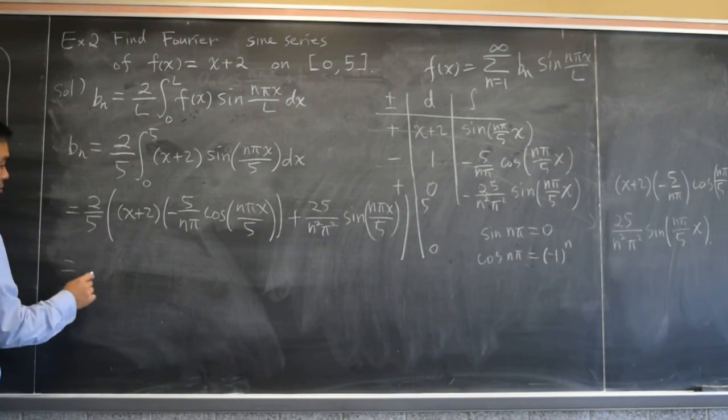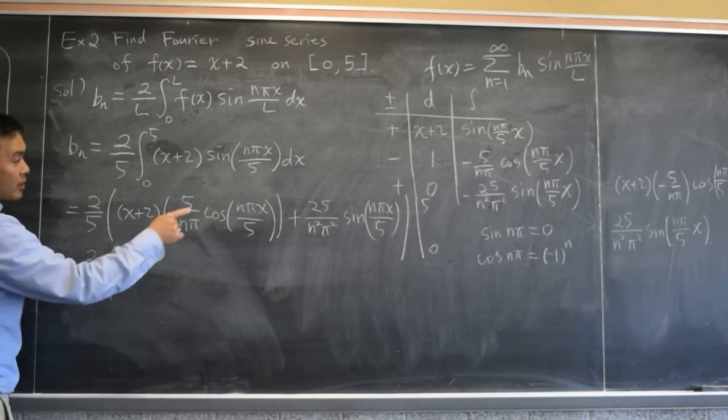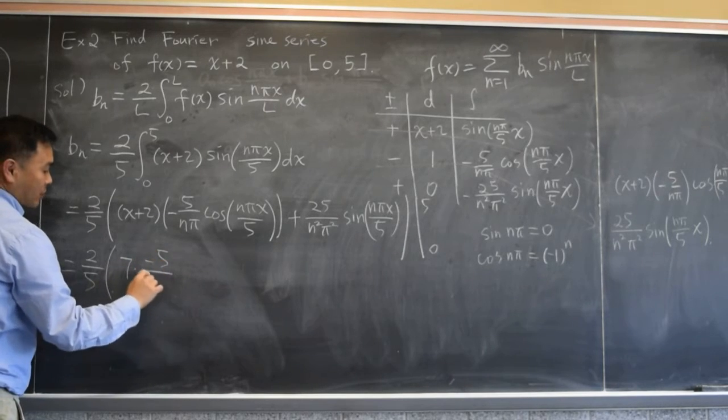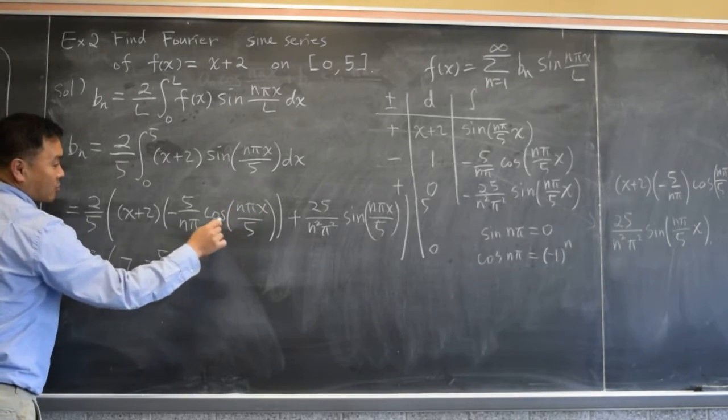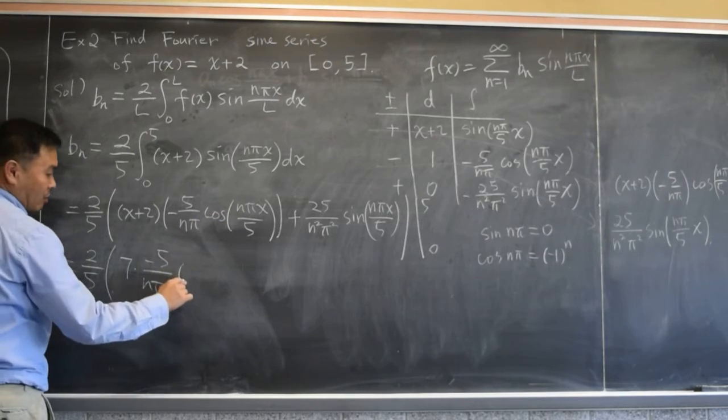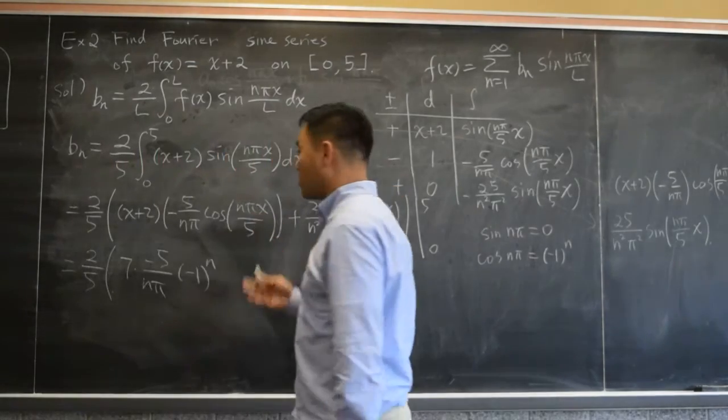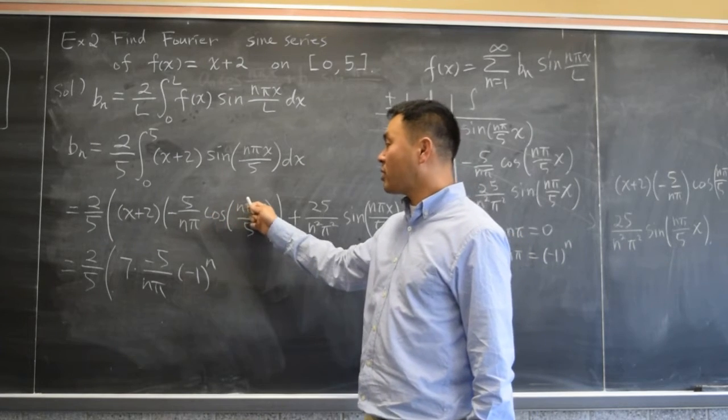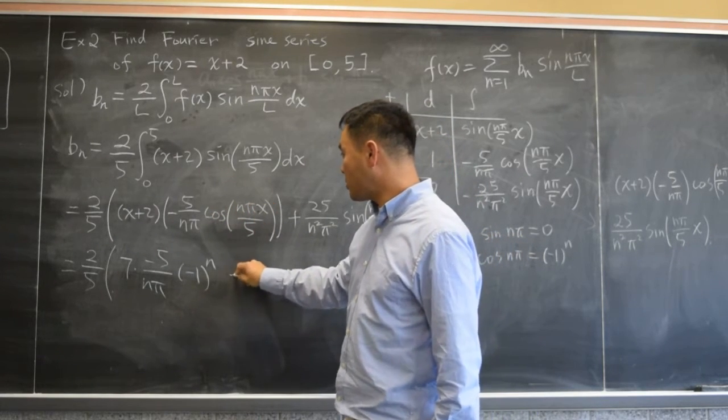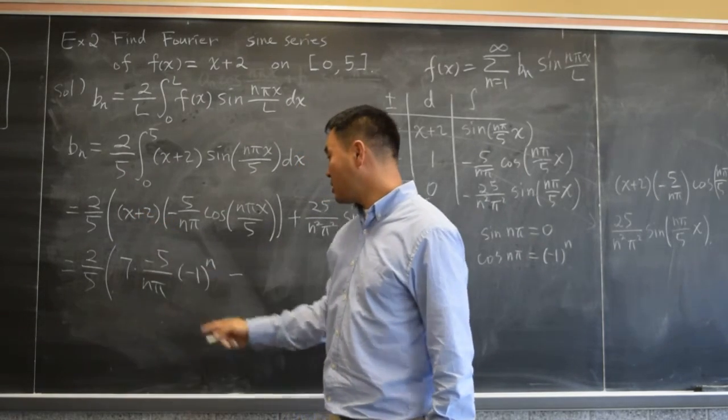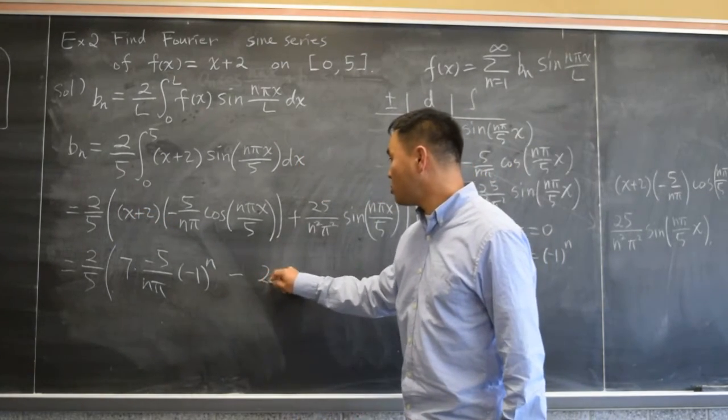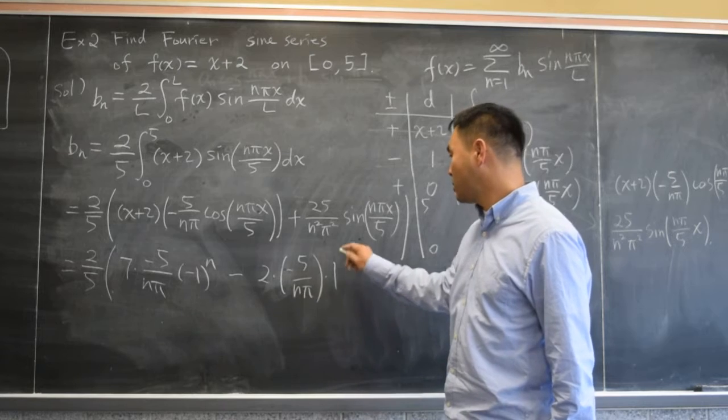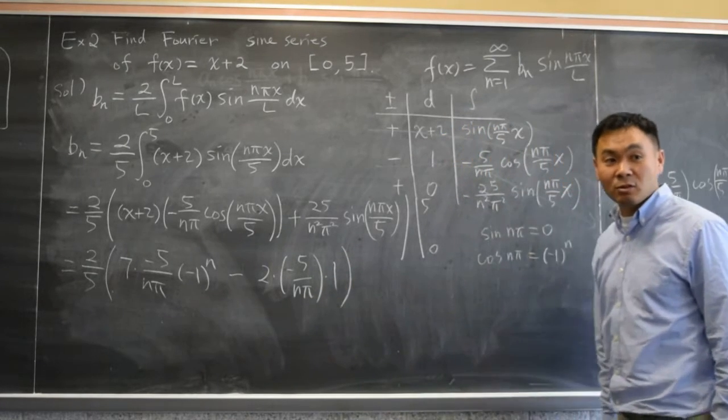Okay, so let's see. If I plug in 5, 5 plus 2 is 7, negative 5 over n pi. And then if I plug in 5, you get cosine n pi, right? So you get negative 1 to the n power. That's what I get when I plug in 5. This gives you 0. So then if I plug in 0, you get cosine of 0 which is 1. So it's minus. And then this is 0 plus 2. So it's 2 times negative 5 over n pi times 1. So that's the result of your calculation.